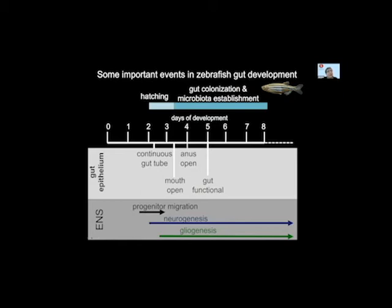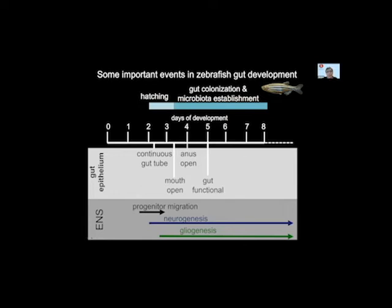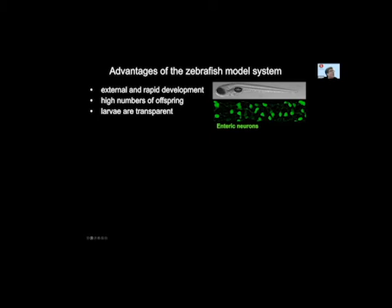The advantages of the zebrafish model system include this external rapid development, high numbers of offspring, and the larvae are transparent — so we can look at gut motility, gut colonization, and immune response in a live intact animal, and then look at gut microbiota composition in the same animal. Zebrafish can be reared germ-free very easily: you can surface-sterilize newly laid eggs and grow them in sterile media. You can also re-associate them with bacteria — at a certain point you can either add media from conventionally reared fish or add specific bacterial populations to the flask, and then we also call them ex-germ-free larvae.